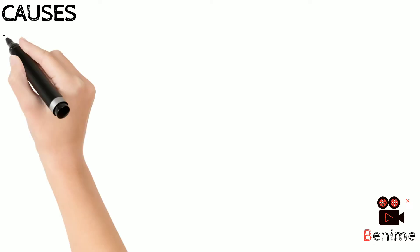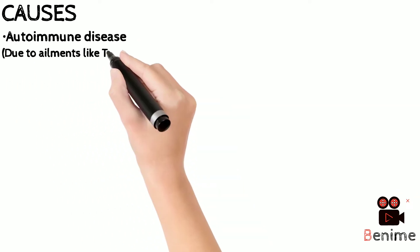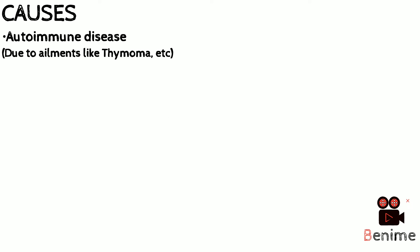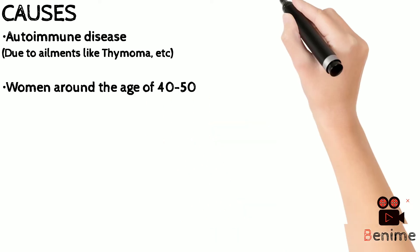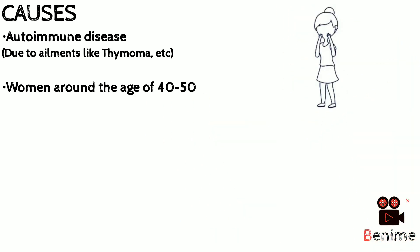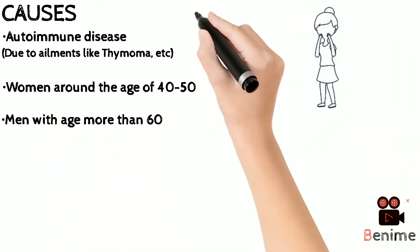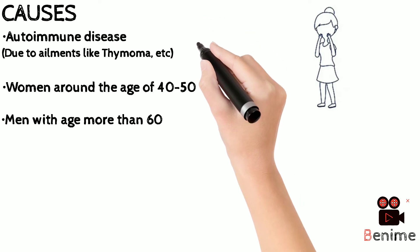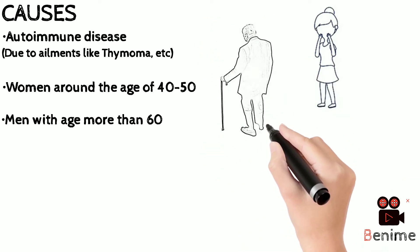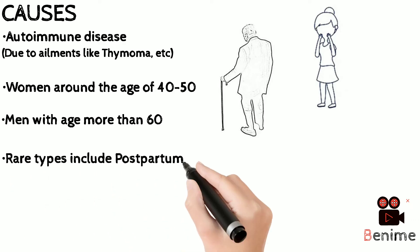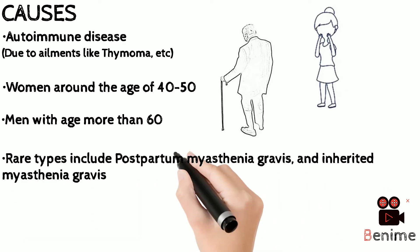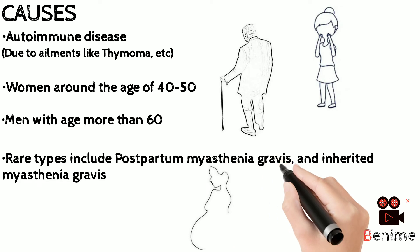Myasthenia gravis is mostly associated with autoimmune diseases such as thymus gland tumor. A very peculiar bimodal age distribution is seen, where females around the age of 40 are affected, whereas males above the age of 60 become victims of myasthenia gravis. Some other rare types include postpartum and inherited myasthenia gravis.